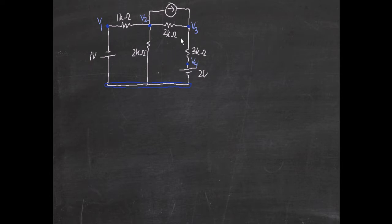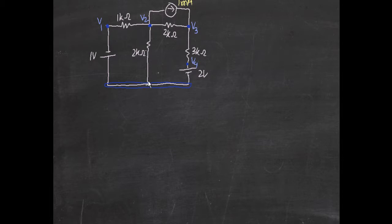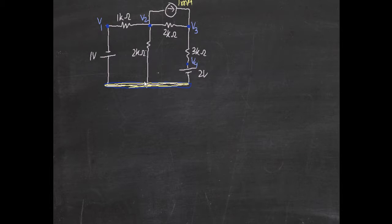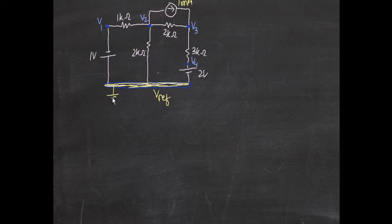This node is also a junction because it has three elements connected to it — two things, one resistor, and one current source. After identifying the nodes, this bottom portion will be taken as one single node, because there are no resistors between those points — just wires. So this will be taken as the reference node, or V reference.